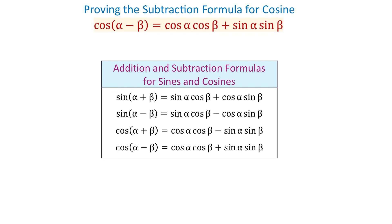In this video, I will prove the last trigonometric identity, and this is: cosine of alpha minus beta equals cosine of alpha times cosine of beta plus sine of alpha times sine of beta.